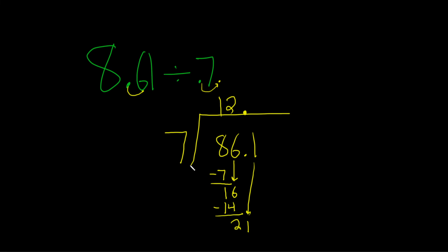How many times does 7 go into 21? Well, 3 times. And you can keep going if you want. 3 times 7 is 21. We subtract. And we get a remainder of 0. So the answer is 12.3.